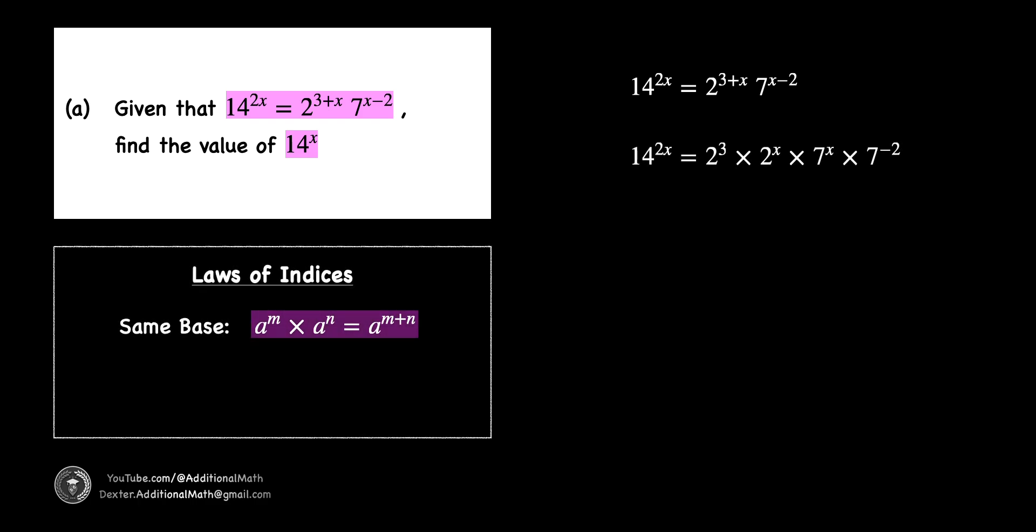When multiplying indices with the same base, we add the powers. The reverse will also be true. We can separate an index into a product of two indices with the same base. 2 to the power of 3 plus x would therefore be equivalent to the product of 2 to the power of 3 and 2 to the power of x.